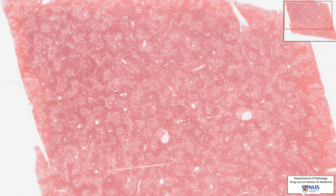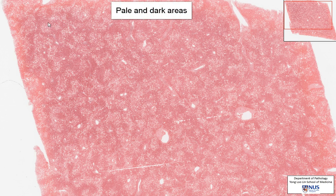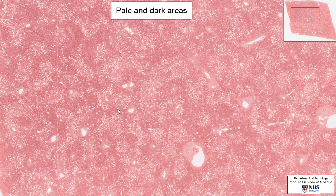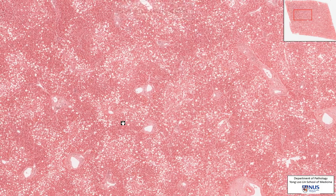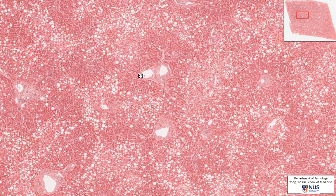This is a microscopic section of the liver and we can see that at low power magnification, there are alternating paler areas and darker pink areas. Let's zoom in to find out what's going on.